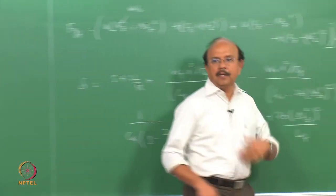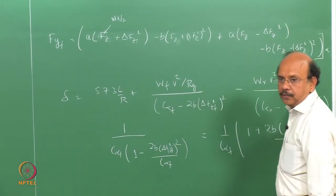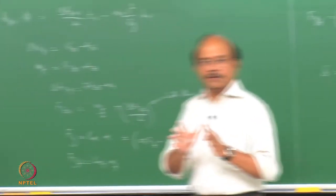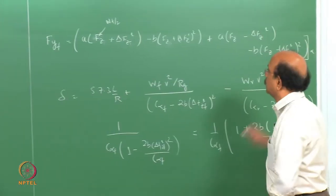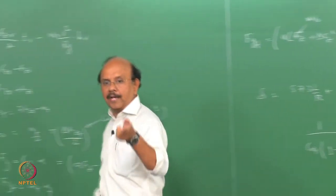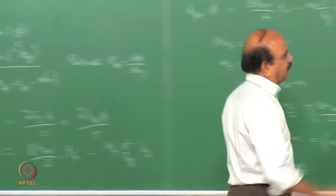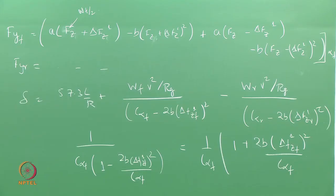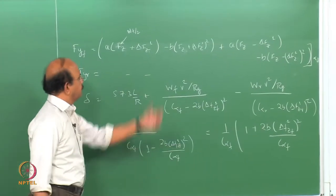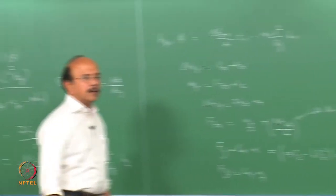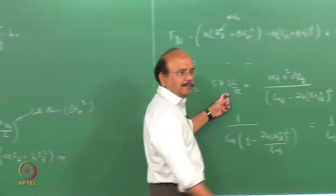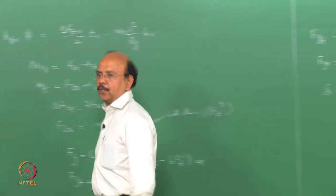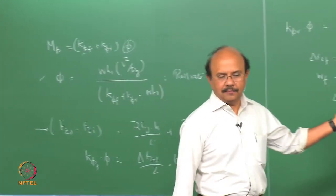Note that this is a bicycle model, so we are compressing or replacing two tyres with respect to one tyre. The same expression applies for the rear — there we replace it by C_alpha_R and so on. A student asks about 57.3 — yes, I am replacing radians by angles, because usually these alphas are expressed in terms of angles. I am converting L/R in radians into angles — that is all.